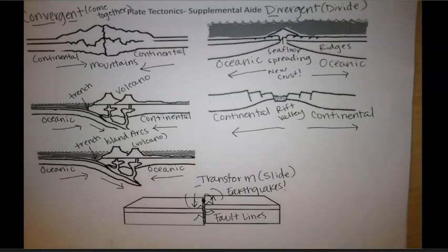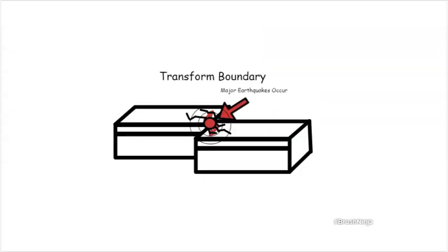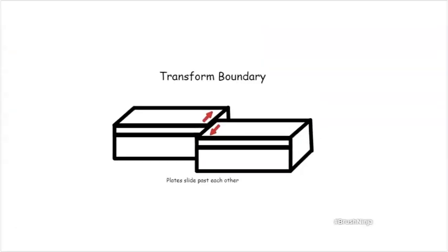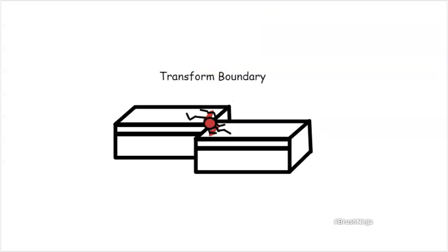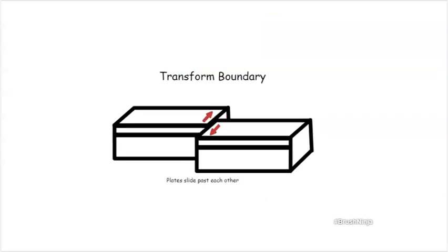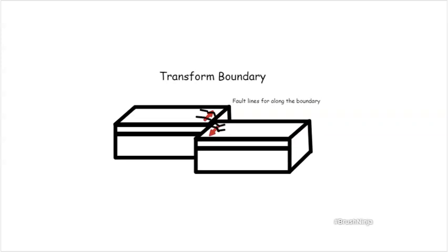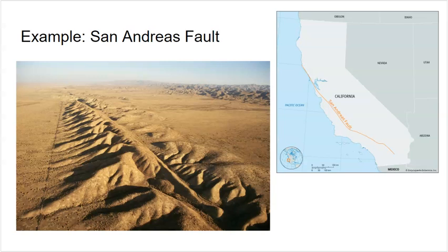Here we have our transform boundary where these two plates are sliding past each other. We have fault lines that form along it, and then major earthquakes. A very common example in our country is the San Andreas Fault in California. It runs along the western side and down most of the state. That fault line creates big cracks in the ground and causes a lot of earthquakes — Southern California has a lot of earthquakes.